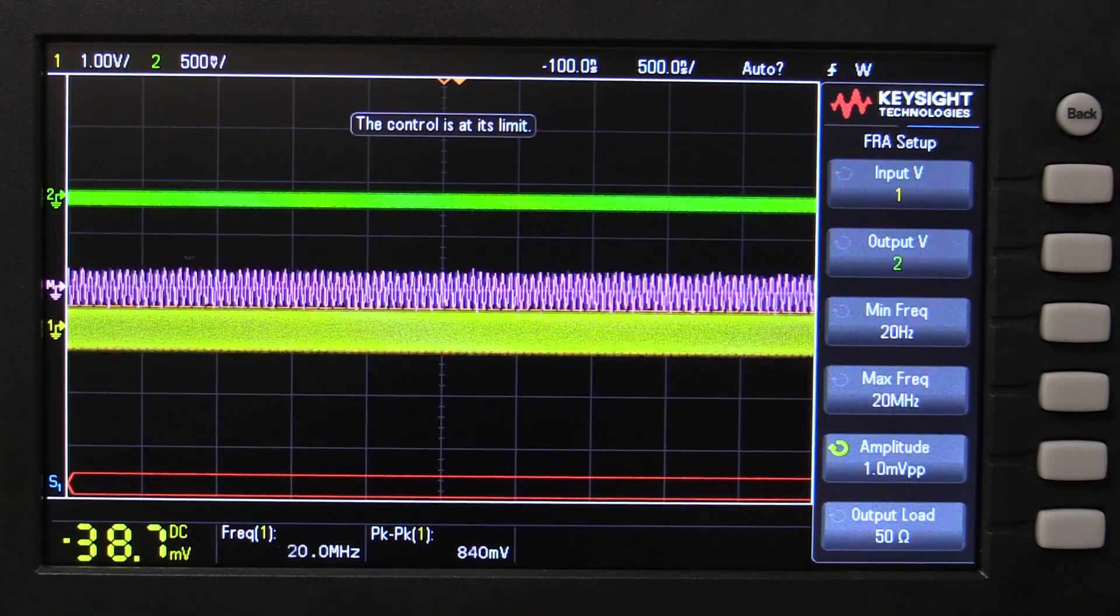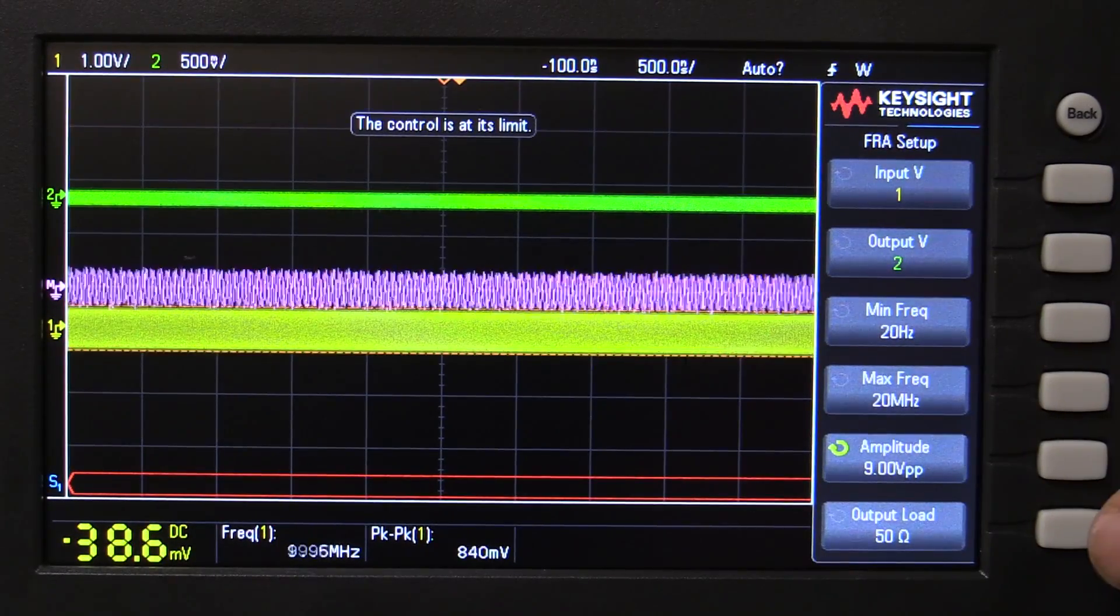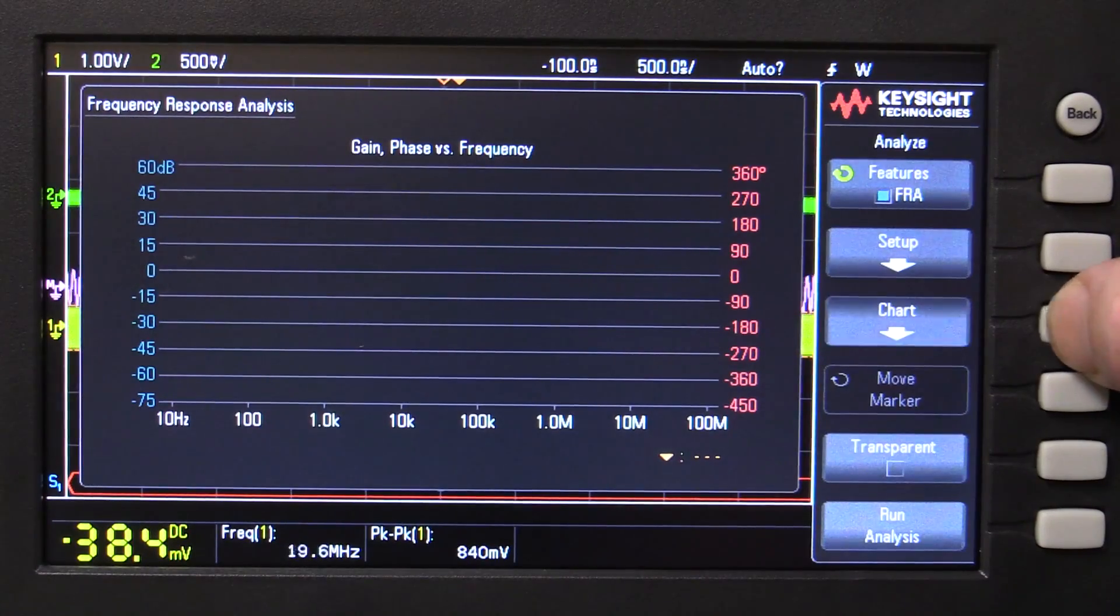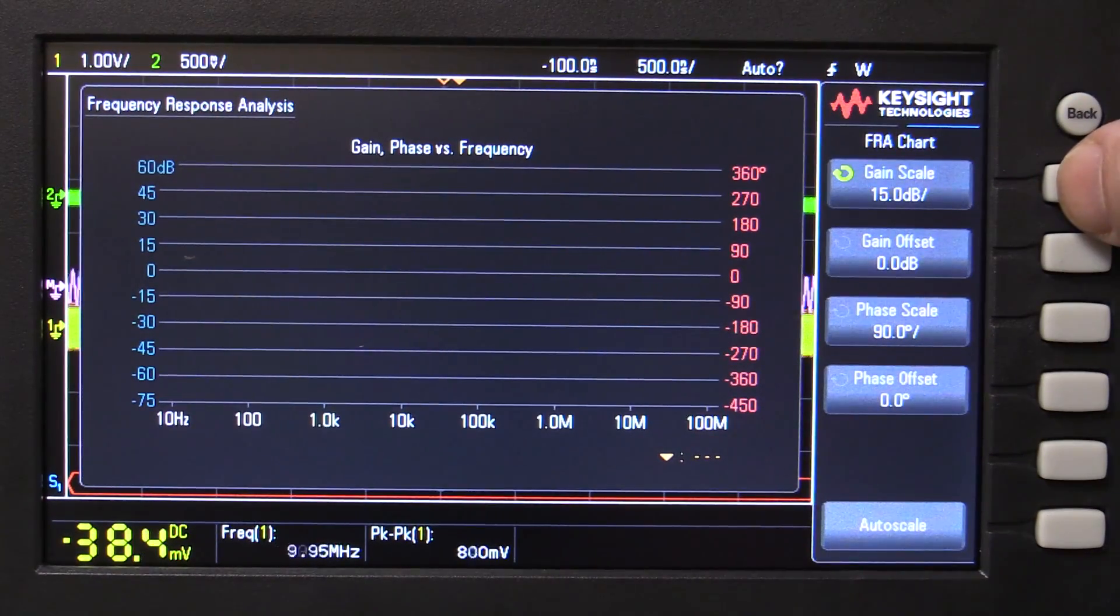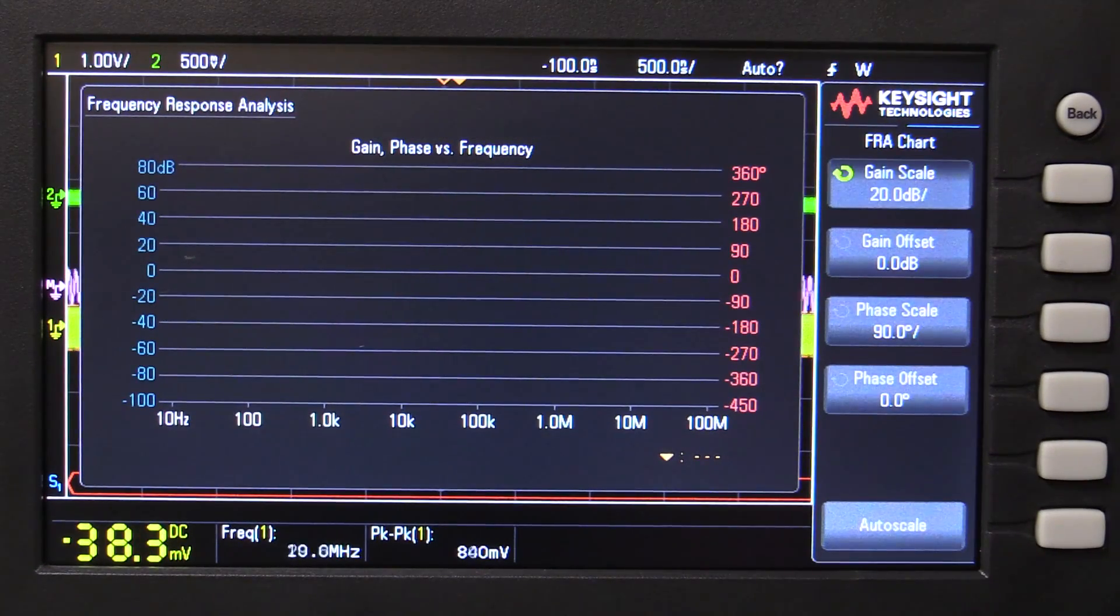Max frequency, yep, 20Hz. There we go. Amplitude, we can set our amplitude. That can go up to 9 volts peak to peak. Thank you very much. Down to 1 millivolt. And whether or not our output load is 50 ohms. And what else have we got in here? Okay, Chart. What can we do? We can set our gain scale.